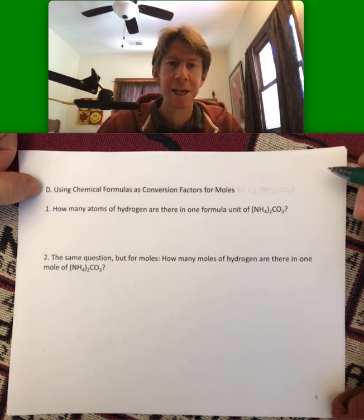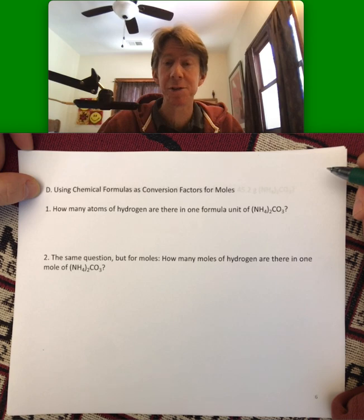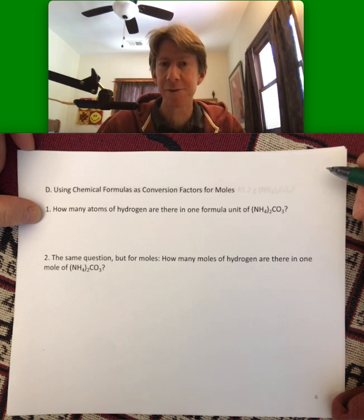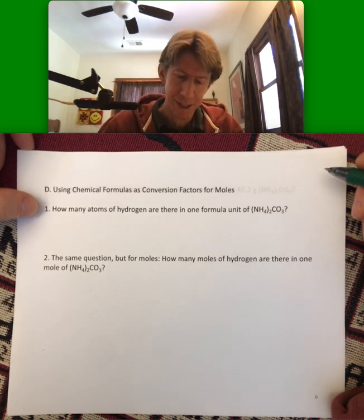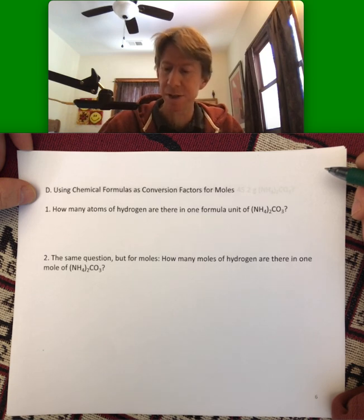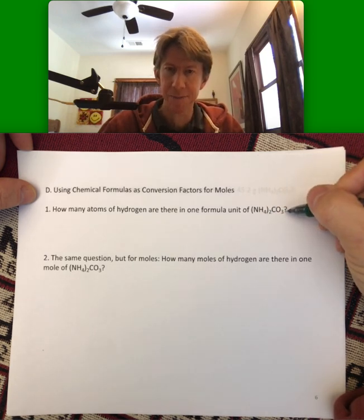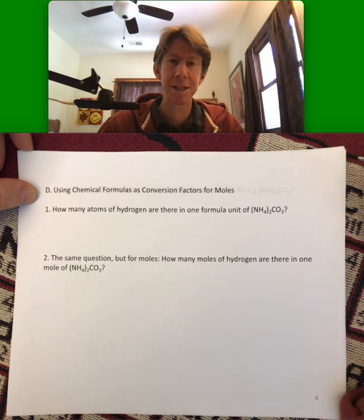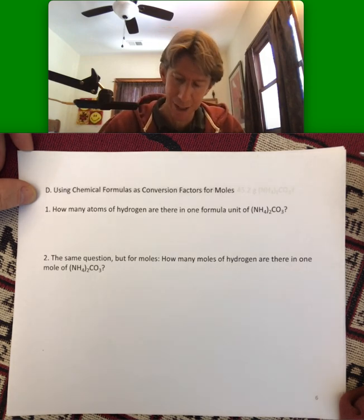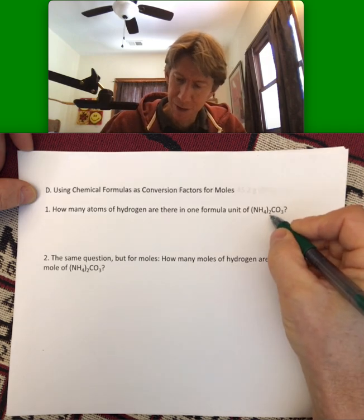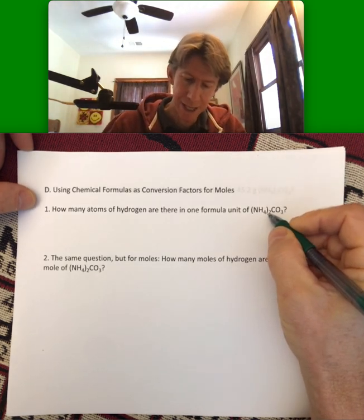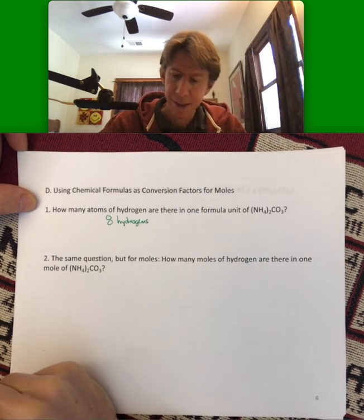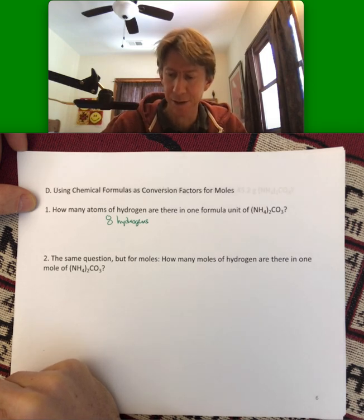Now we're going to tackle the idea of using chemical formulas as conversion factors for moles, and question number one is a problem that we've seen a similar one previously in the lecture notes. It says, how many atoms of hydrogen are there in one formula unit of ammonium carbonate? And in fact, to find the molar mass of this correctly, you need to know that. We just did it in the previous lecture video, but it would be two times four, so there are actually eight hydrogens.